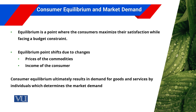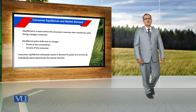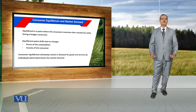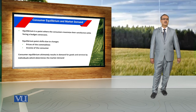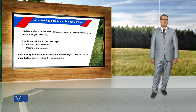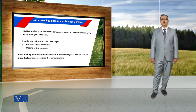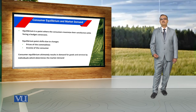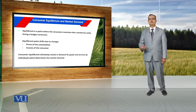There is a change in equilibrium of the consumer because of changes in prices of commodities and income of the consumer. Consumer equilibrium ultimately helps us find out the demand for goods and services by individuals, and on the basis of these individual demands we describe market demand. Consumer equilibrium represents the optimal choices of a particular consumer against a given budget constraint — those choices where the consumer is maximizing satisfaction under their given income constraint.